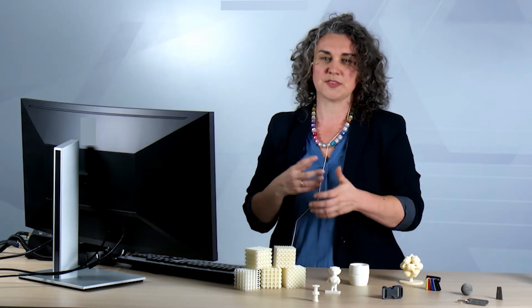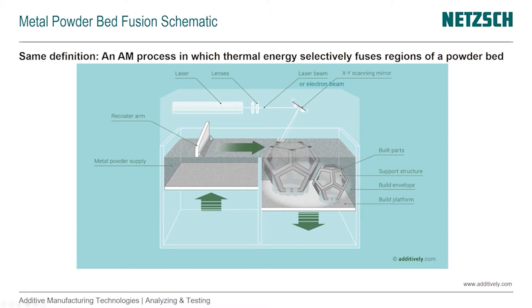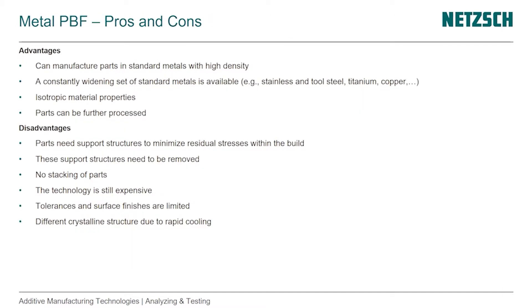Otherwise we would get a lot of shrinkage and warpage in the parts that would make them unusable. Here you see a difference—it's used a blade or recoater arm, but again that's also some polymer processes have that. And in addition to the laser beam, some machines work with an electron beam and that looks a little bit different up here, but that's very detailed differences that I don't go into detail here.